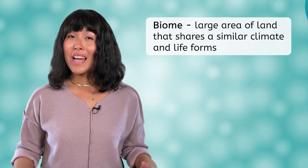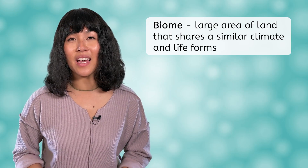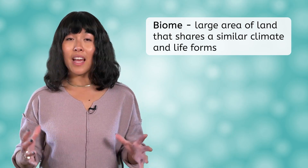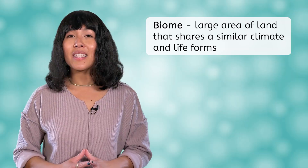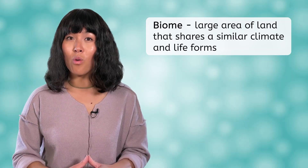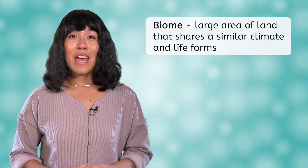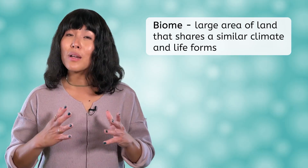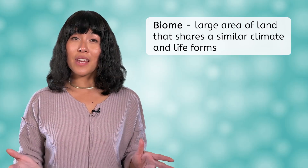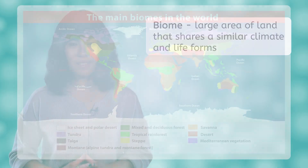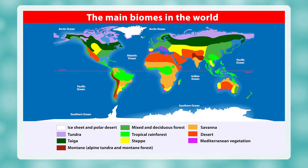A biome is a large area of land that shares a similar climate and life forms. There are at least 10 terrestrial or land-based biomes recognized by scientists, and many biomes can be further subdivided into more specific sub-biomes. Let's look at a worldwide map of major biomes. Can you find where you live on the map? Which biome does the map show for your location?